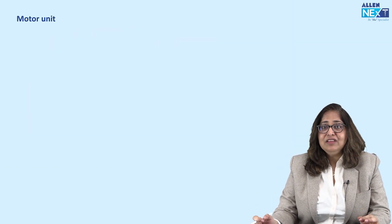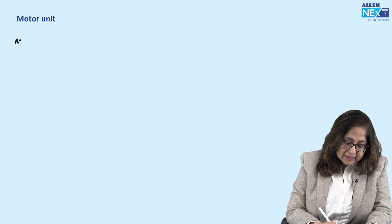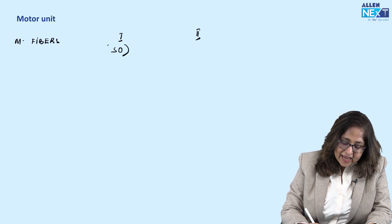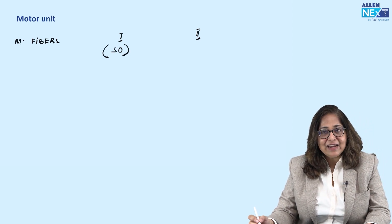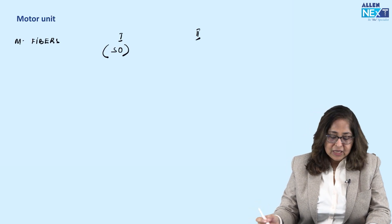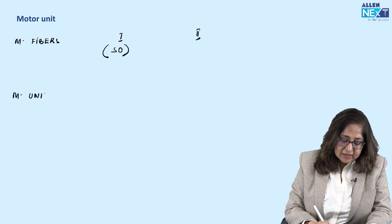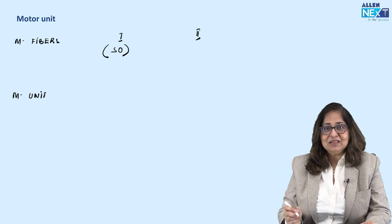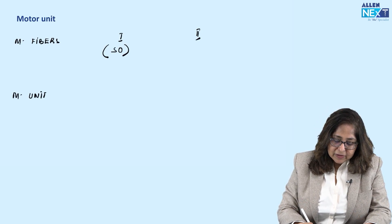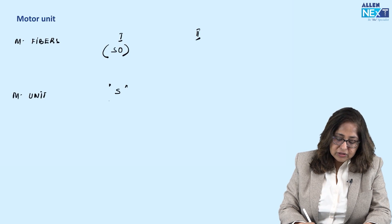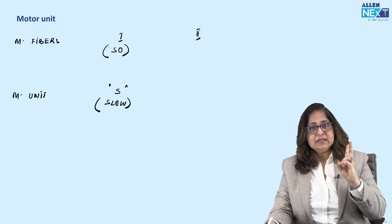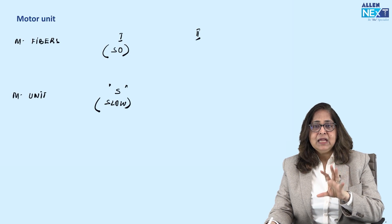Now let's look at the nomenclature of motor units. Type 1 muscle fiber is also known as the SO fiber — S for slow, O for oxidative. The motor unit containing type 1 fibers is known as the S motor unit, or slow motor unit. Type 2 muscle fibers are fast, large, have glycolytic metabolism, and are white in color.